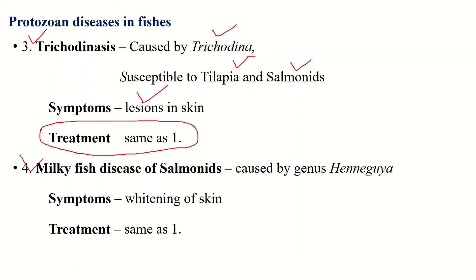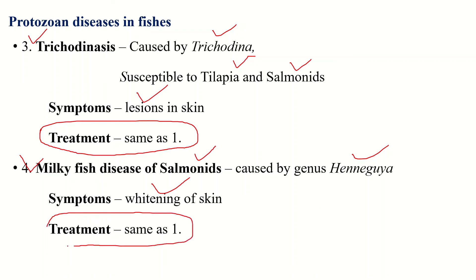The fourth protozoan disease is Henneguya disease of salmonids, a milk fish disease caused by the genus Henneguya. Symptoms include whitening of the skin. The same treatments as for Ichthyophthiriasis can be used — formalin, malachite green, methylene blue, acriflavine, or NaCl solution dip treatments. These are some protozoan diseases affecting fishes, along with their symptoms and treatments. If you liked this video, please share it with your friends and subscribe to the channel.